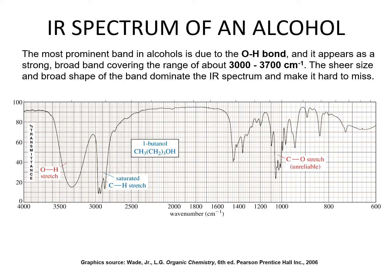The most prominent band in alcohols is due to the O-H bond, and it appears as a strong broad band covering the range of about 3000 to 3700 centimeters to the minus one. The sheer size and broad shape of the band dominates the IR spectrum and makes it hard to miss — visible as a very broad belly representing O-H stretching. We also have C-H stretching from saturated carbon interactions. This represents 1-butanol. Some interactions in the fingerprint region also correspond to the carbon-oxygen stretch.